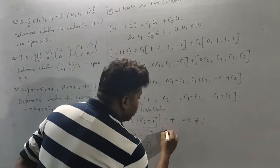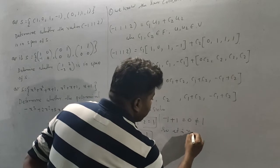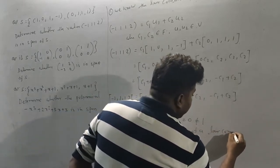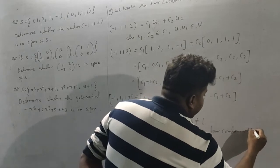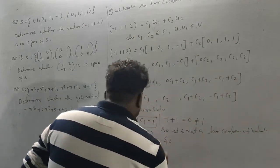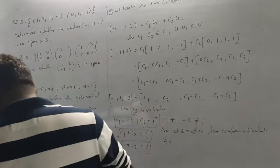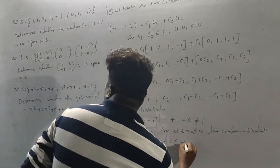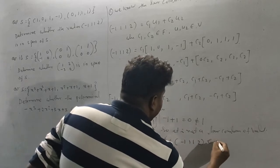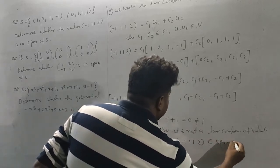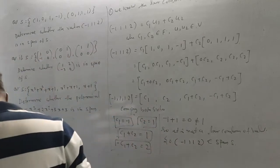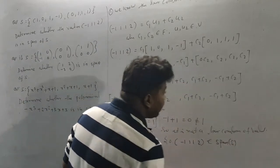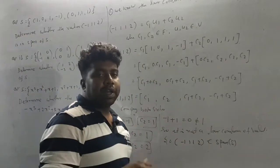Checking the equations, it is not a valid linear combination of the vectors. Therefore, (-1, 1, 1, 2) does not belong to Span S.